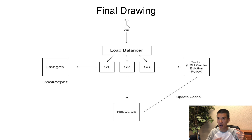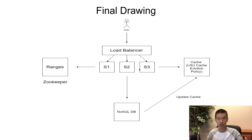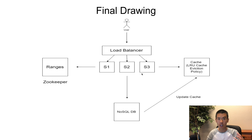Here's the final architecture diagram. A user connects to a load balancer — least bandwidth or least response time — which routes to application servers. When fetching a long URL from a short URL, the server first checks the cache to speed up reads. If not found in cache, it queries the database; the database can then update the cache. Whenever a new server is added or a server exhausts its counter range, it contacts ZooKeeper to get a new range.